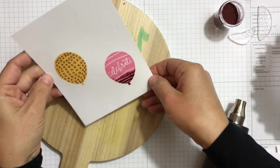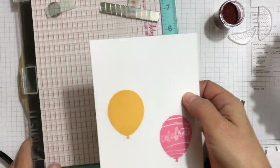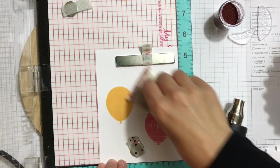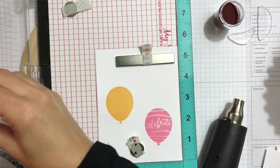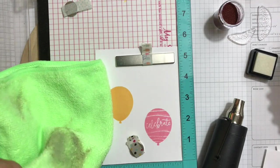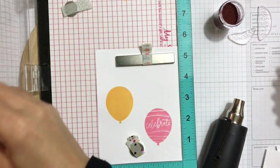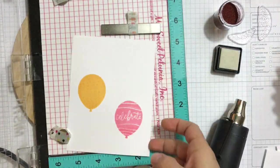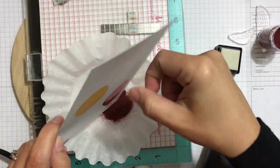So you can see how that partial embossing is only on the bottom. Now I'm repeating the same process for the other balloons. So I'm just inking the bottom of the balloon with Versamark and the whole one, the yellow one. And again I'm using rose gold for the pink balloon and gold for the yellow.